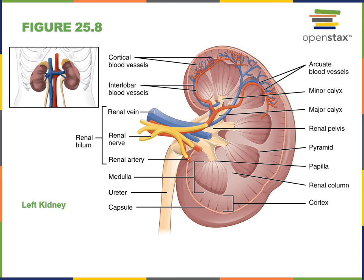The ureter is a muscular tube that transports urine away from the kidney to the urinary bladder, where it will be stored. The ureter, along with large blood vessels and nerves, attaches to the kidney at the concave medial surface. This region, known as the renal hilum, is where the renal pelvis attaches to the ureter.